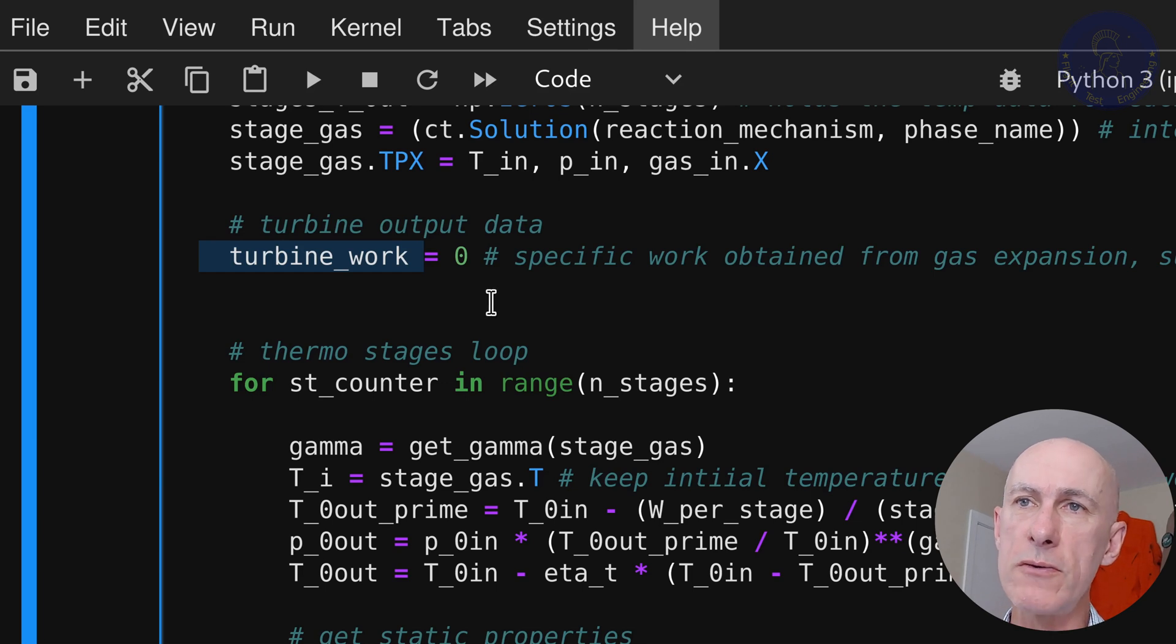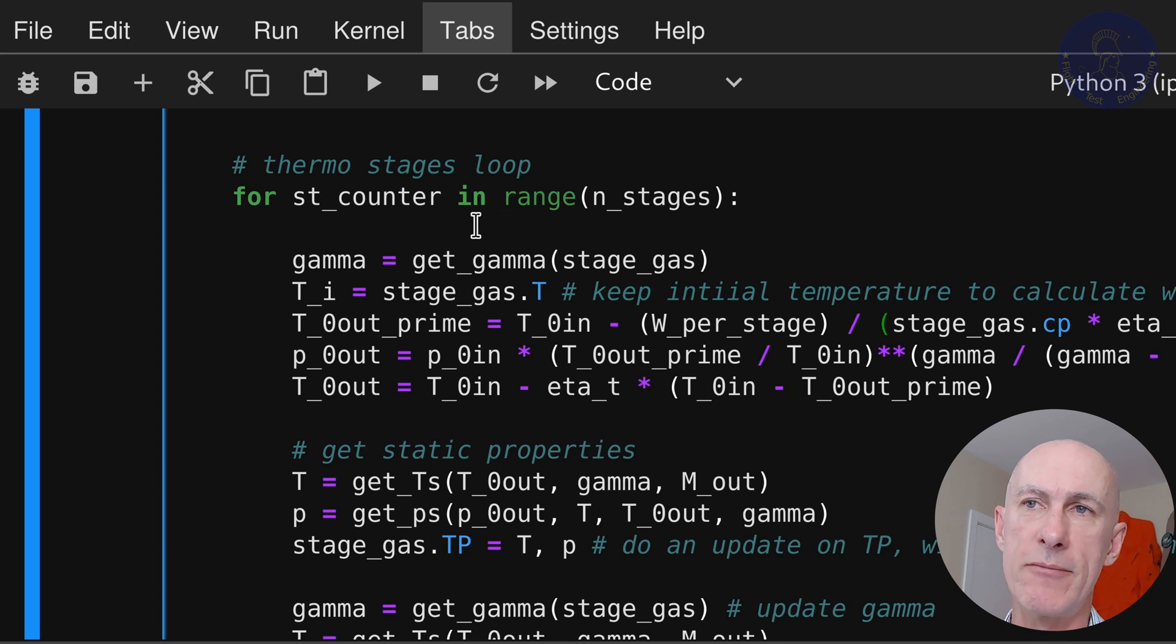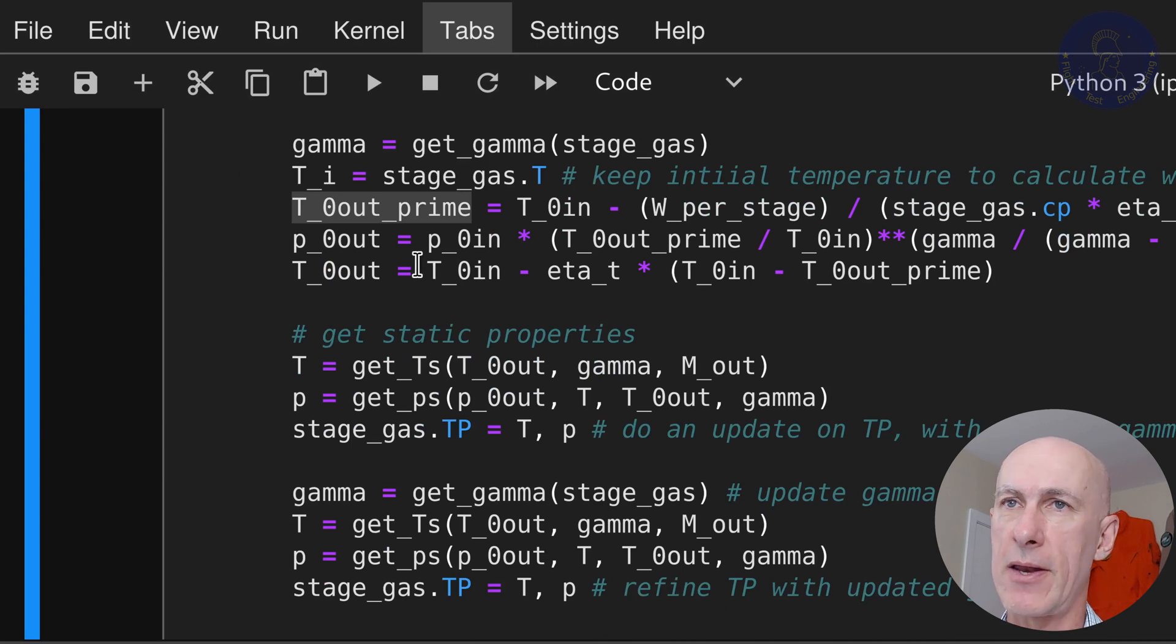The thermal stages loop. In this case, we are not closing any loops and iterations, so we'll use a simple for loop here to iterate through the number of turbine stages. It is simpler than the compressor. In this case, as you can see, we don't have to do any iterations. And now we just follow the equations. We calculate the gamma to start. We keep the initial temperature TI handy to help us calculate the work a little later on, like we did on the compressor as well. We get the stagnation temperature for an ideal isentropic expansion, T out prime. Then the stagnation pressure. And finally, we get the real stagnation temperature considering the efficiency, eta T.